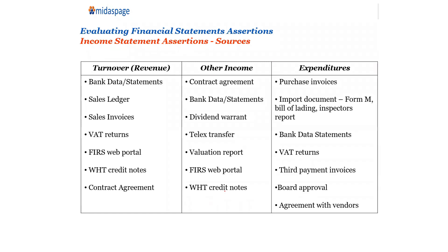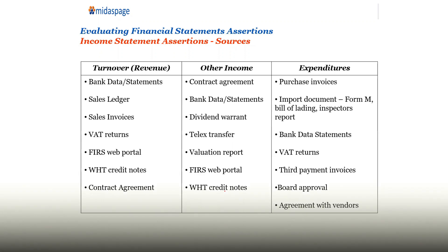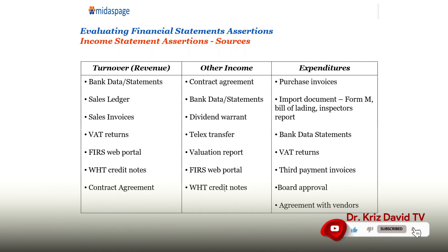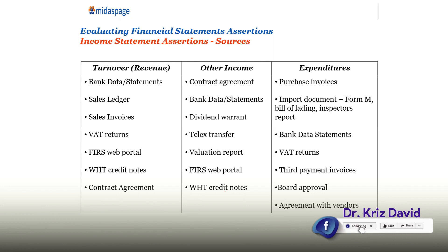If you want to test revenue — say for completeness, are all sales that should be recorded been recorded or included in the financial statements? To confirm this, go to their bank data, go to their bank statements, ask for the sales ledger. For instance, randomly say: give me the sales ledger for July. You may discover that the sales ledger for July is even more than the turnover they declared in their account. That tells you it fails the completeness test.